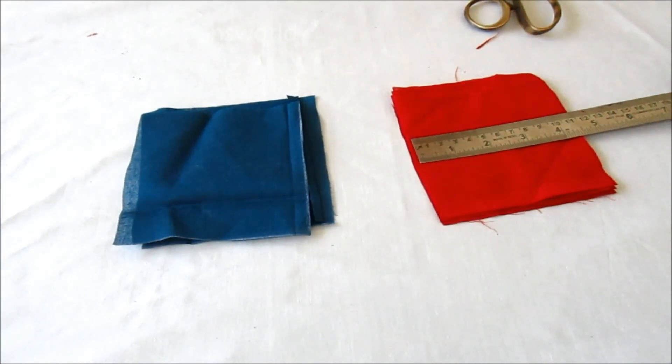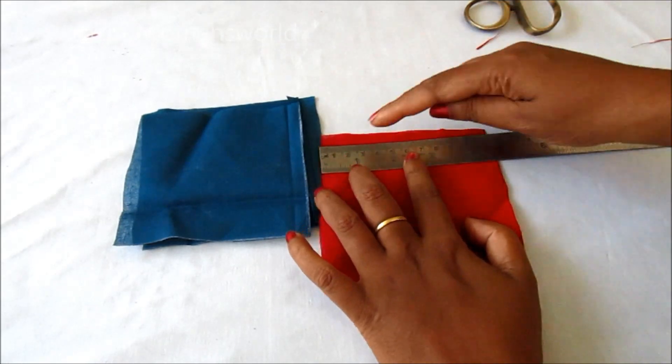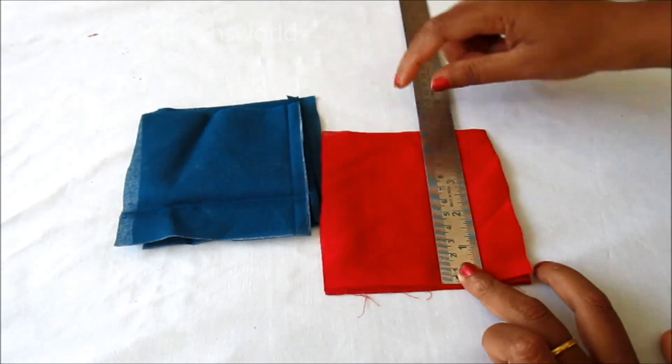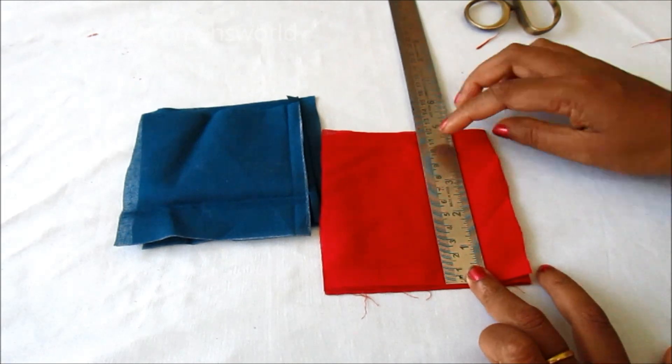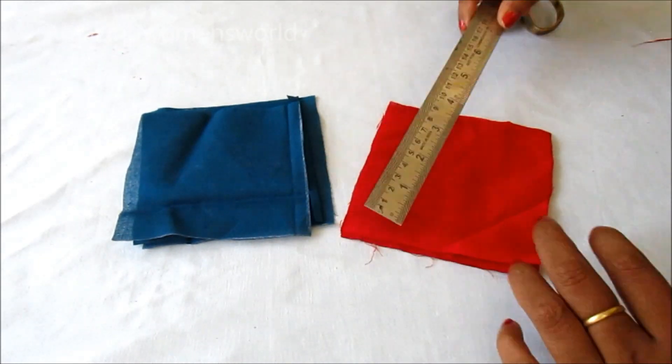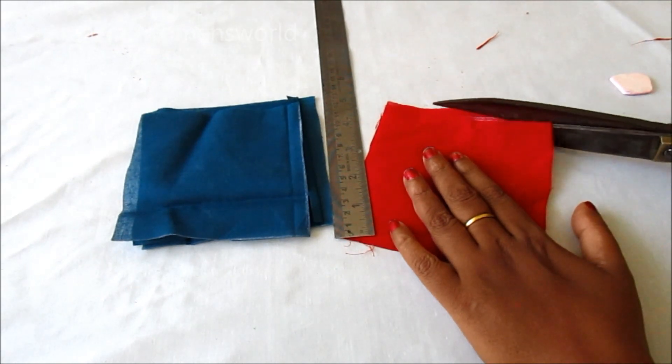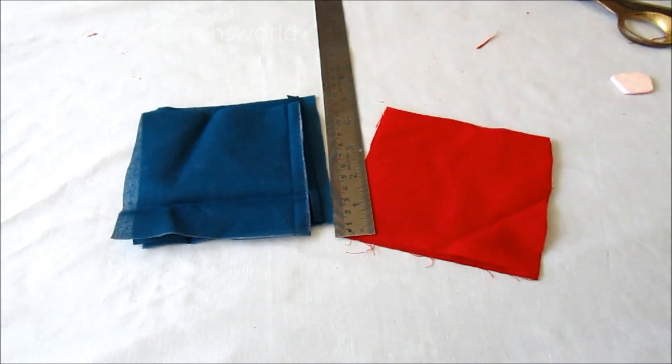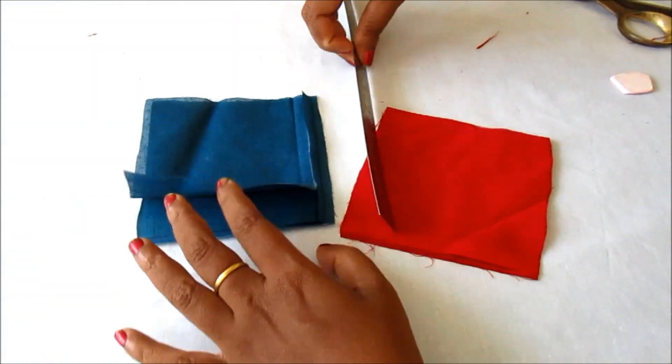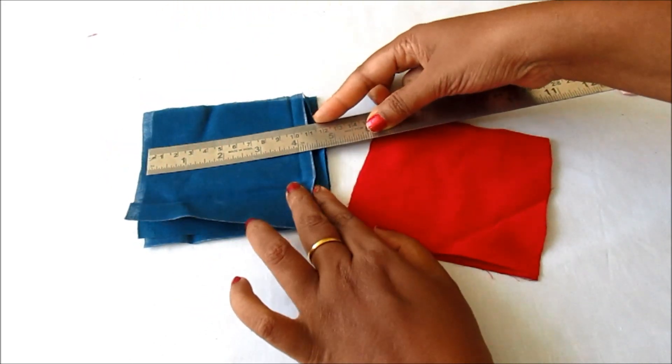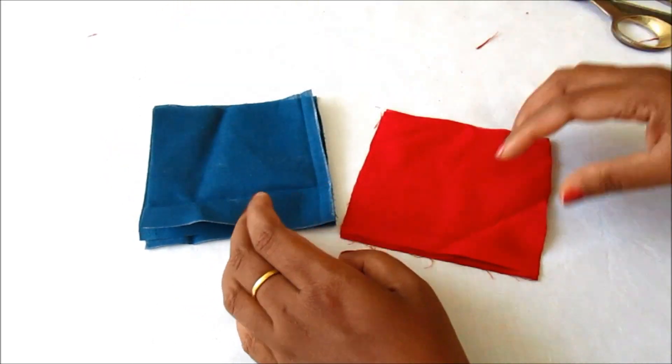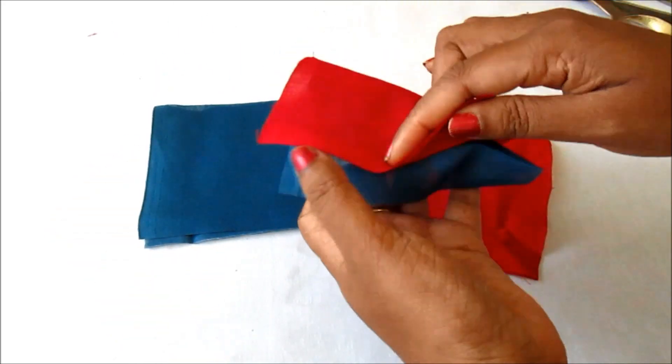For this project, I am using two color strips which are four and a half by four and a half inches. You can take any square shape of your required length. Trimming off all the extras with the length and width of four and a half by four and a half inches.